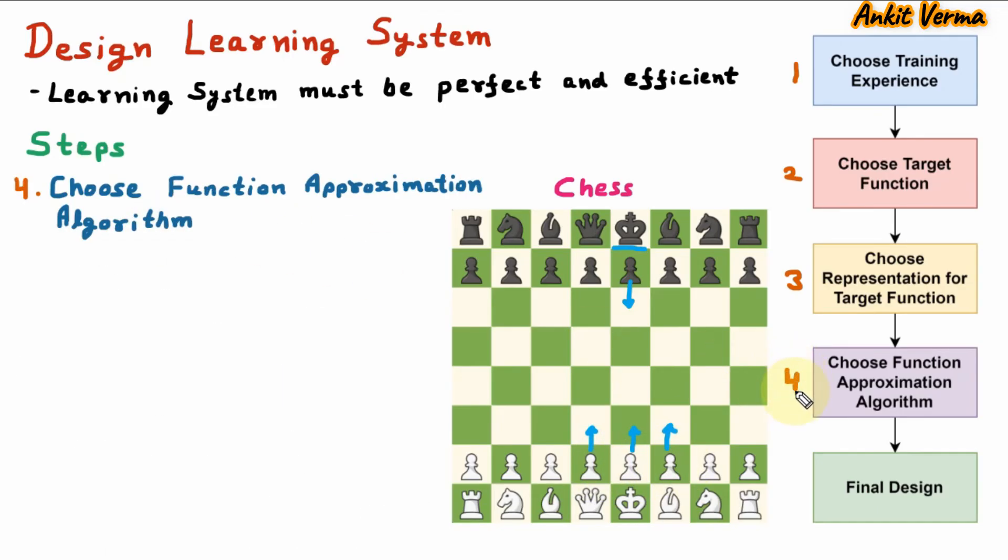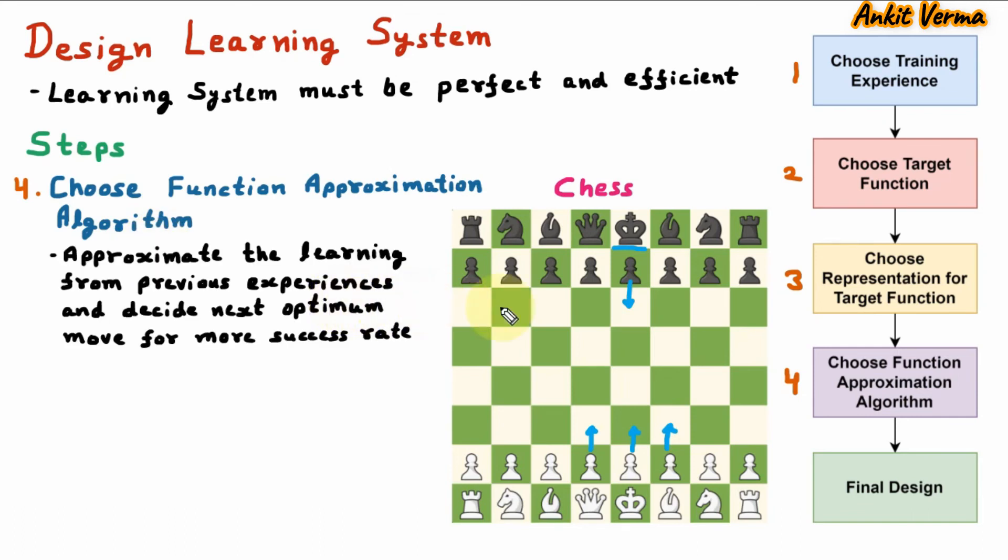Now, the fourth step in designing learning system is choose function approximation algorithm. Approximate the learning from previous experiences and decide next optimum move for more success rate. Here in the chess, this side we are having algorithm, and on the other side we are having opponent, which is some player.